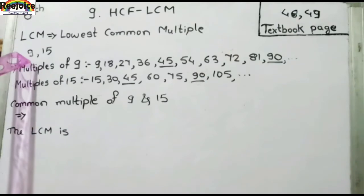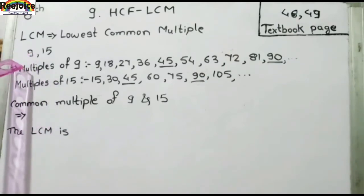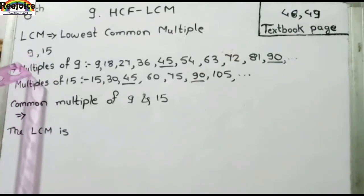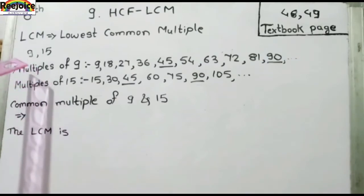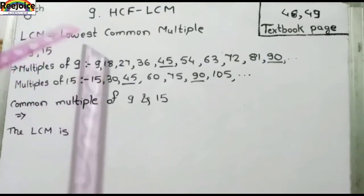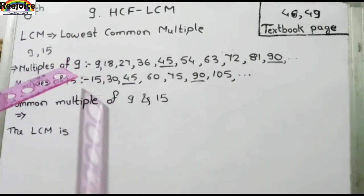So what do we do? We write the multiples of 9 and the multiples of 15 — that means we write their tables.